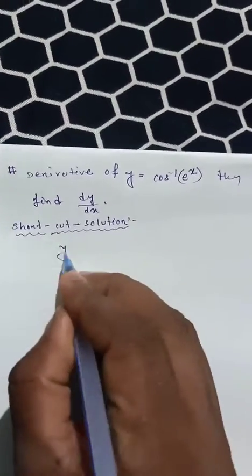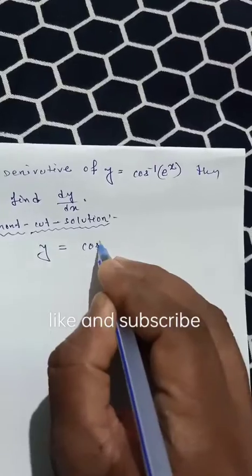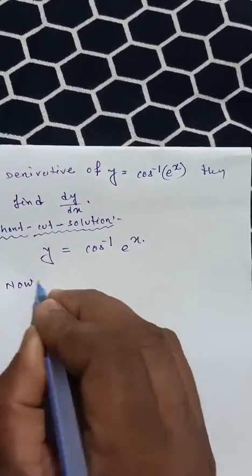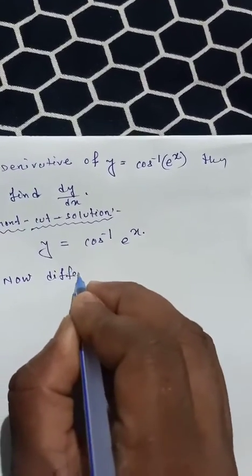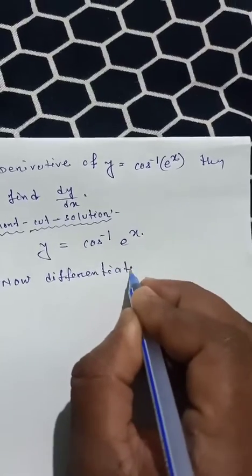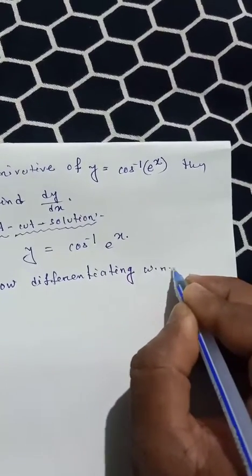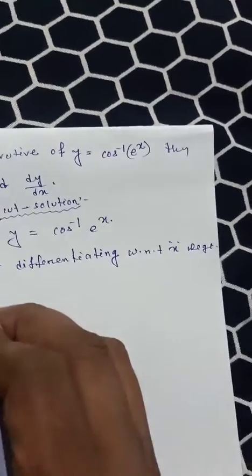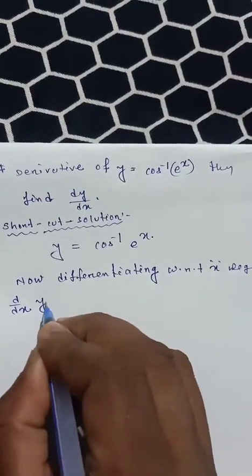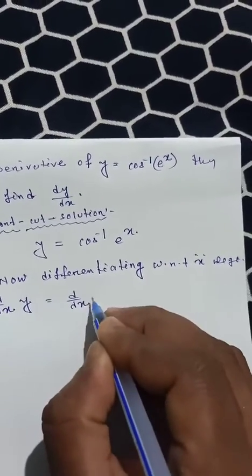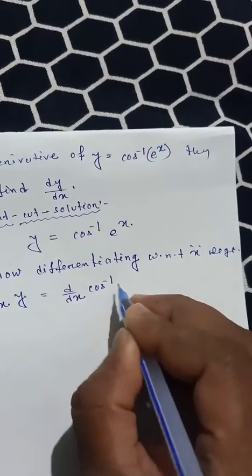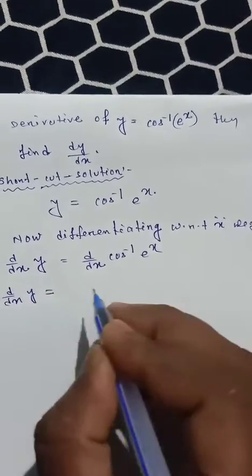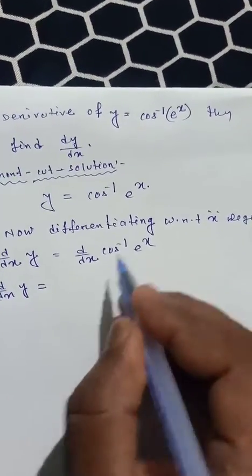y equals cos inverse of e to the power x. Now differentiating with respect to x, we get d by dx of y equal to d by dx of cos inverse e to the power x.